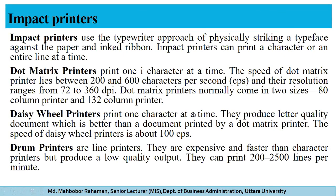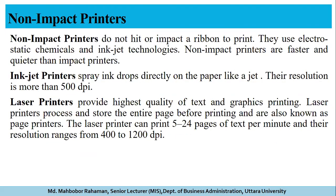Impact printers use the typewriter approach of physically striking a typeface against paper through an inked ribbon. Dot matrix printers print one character at a time at speeds of 200 to 600 characters per second with resolution from 72 to 360 DPI, and come in 80-column and 132-column sizes. Daisy wheel printers also print one character at a time and produce letter-quality documents better than dot matrix at about 100 CPS. Drum printers are line printers — faster and more expensive than character printers but produce lower quality output at 200 to 2500 lines per minute.